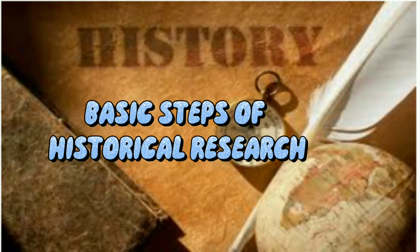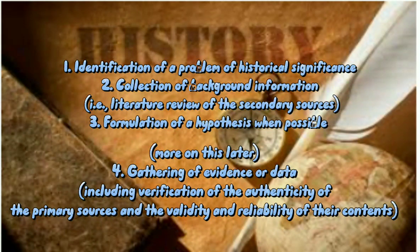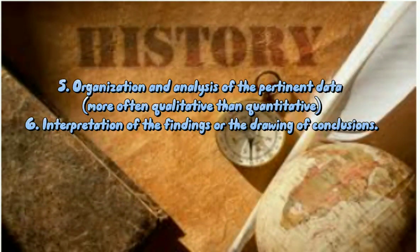Basic Steps of Historical Research: 1. Identification of a problem of historical significance. 2. Collection of background information, i.e., a literature review of the secondary sources. 3. Formulation of a hypothesis when possible. 4. Gathering of evidence or data, including verification of the authenticity of the primary sources and the validity and reliability of their contents. 5. Organization and analysis of the pertinent data — more often qualitative than quantitative. 6. Interpretation of the findings, or the drawing of conclusions.